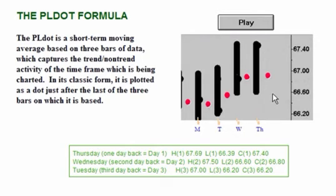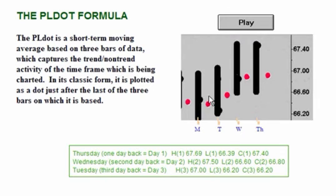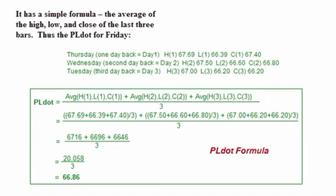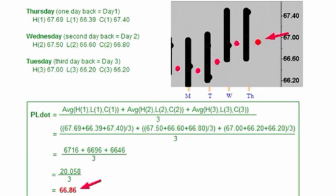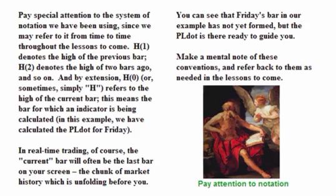This is very straightforward, but we want you to understand. This dot is created from the calculations of this day, this day, and this day. This dot is created from the calculations of Wednesday, Tuesday, and Monday — so three bars, and then the dot.